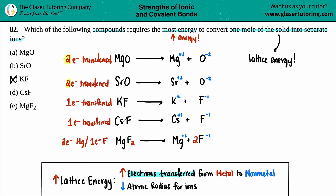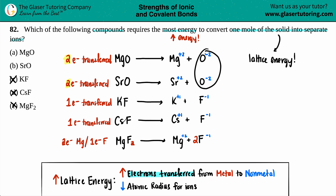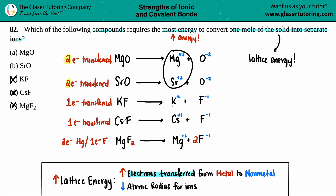So just like that, we eliminate KF, CsF, and MgF₂. It's not a coincidence that all the fluorides are gone — oxygen, being a pure −2 versus −1, skyrockets the lattice energy. Now it comes down to magnesium oxide versus strontium oxide. Which one has the most energy? That brings us to the second property: atomic radius. The smaller the radius, the higher the lattice energy.